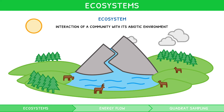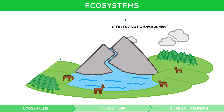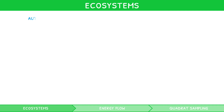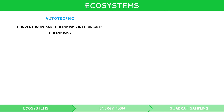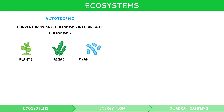Now that we have looked at the basic composition of ecosystems, let's explore the three types of species present in a community. Autotrophic species obtain energy to sustain life by converting inorganic compounds into organic compounds themselves. The most common method of doing this is via photosynthesis. The three types of autotrophic species are plants, algae and cyanobacteria.